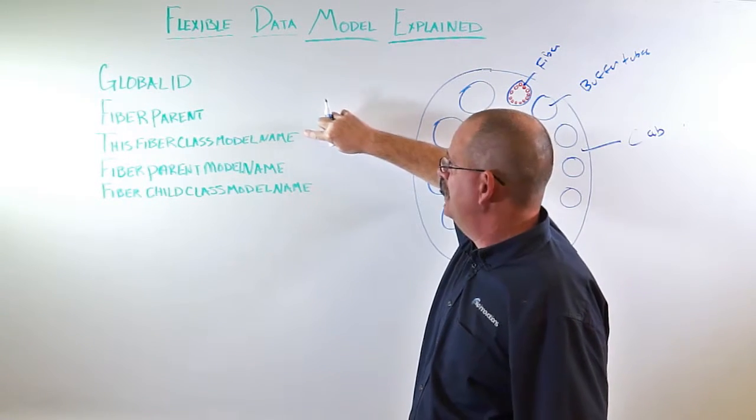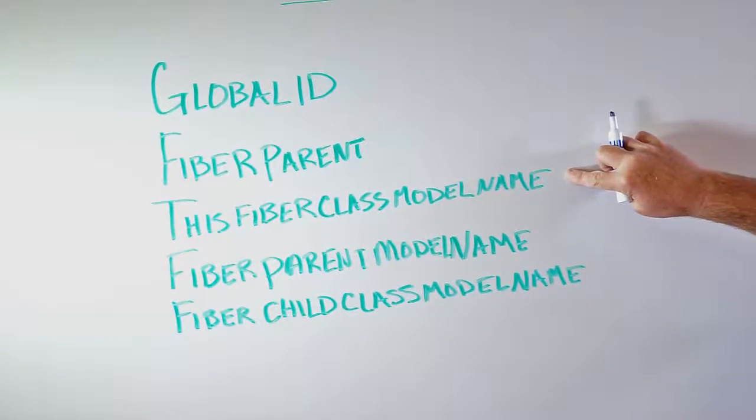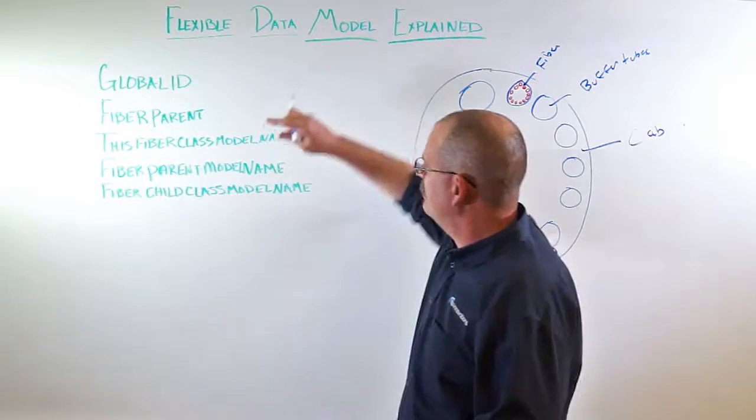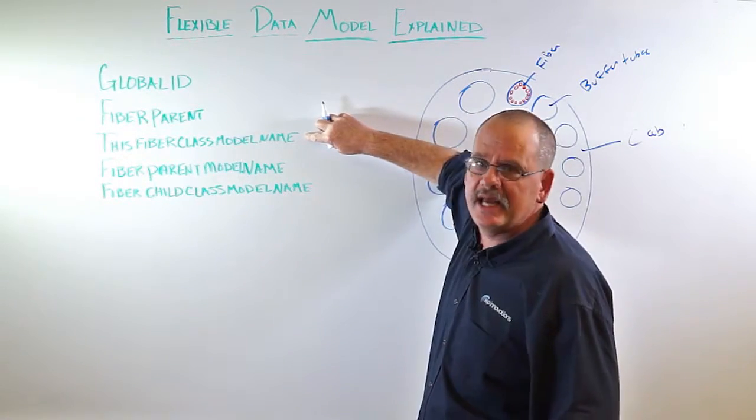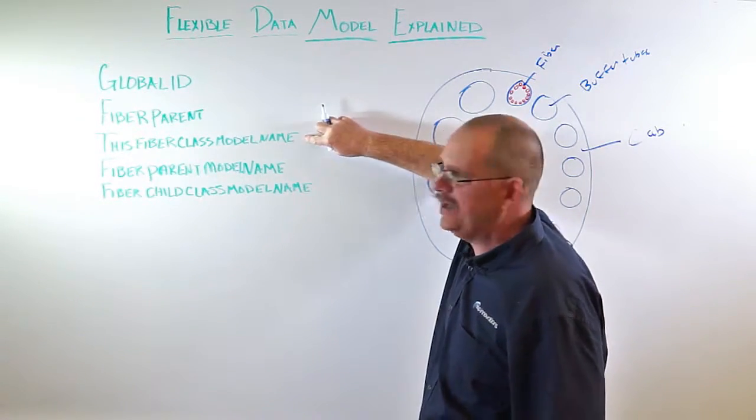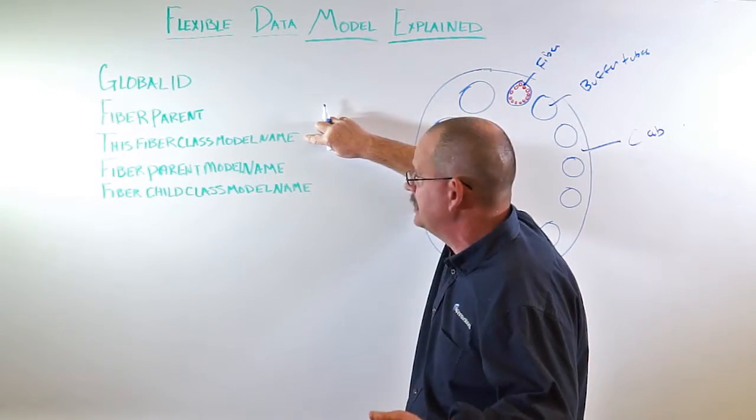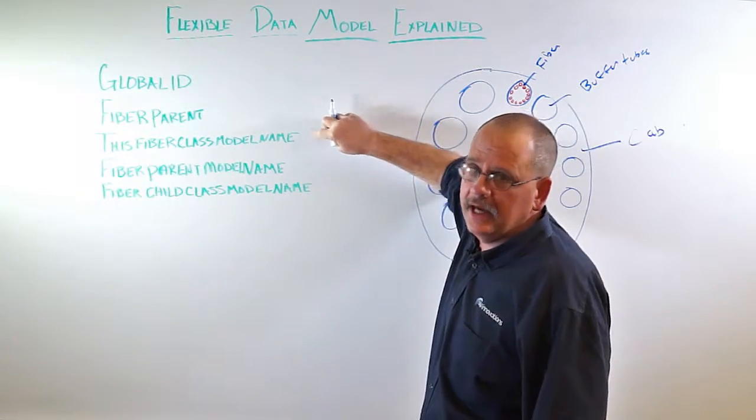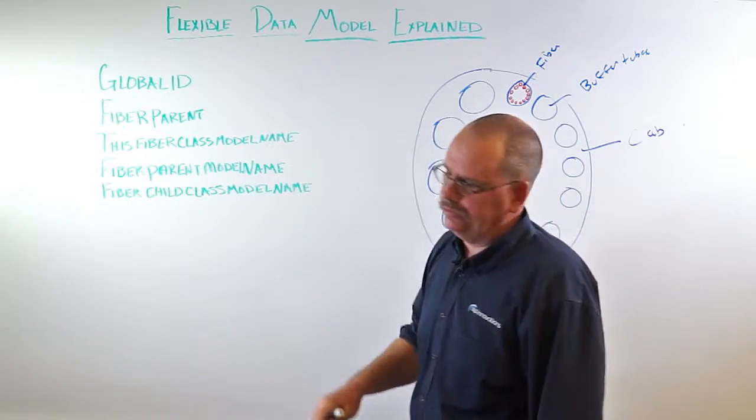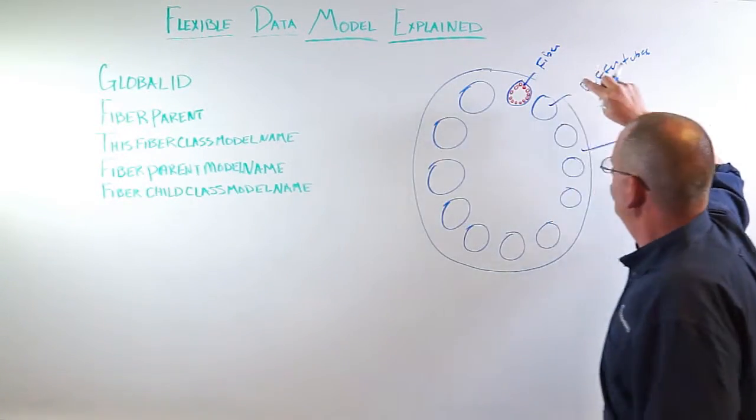Number three, this fiber class model name. This fiber class model name is going to be set up where the default value that is set via ESRI properties must equal the object model name. Let's talk a little bit about this.